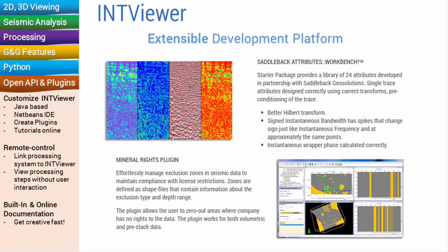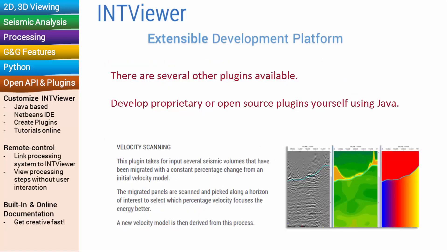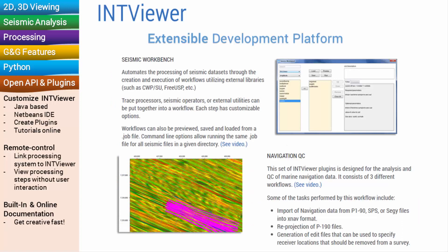Mineral rights help you easily manage exclusion zones to maintain compliance with licensing restrictions. The velocity scanning plugin helps you integrate qualitative observations into velocity modeling. Check out our other videos covering the plugins Seismic Workbench and Navigation QC.